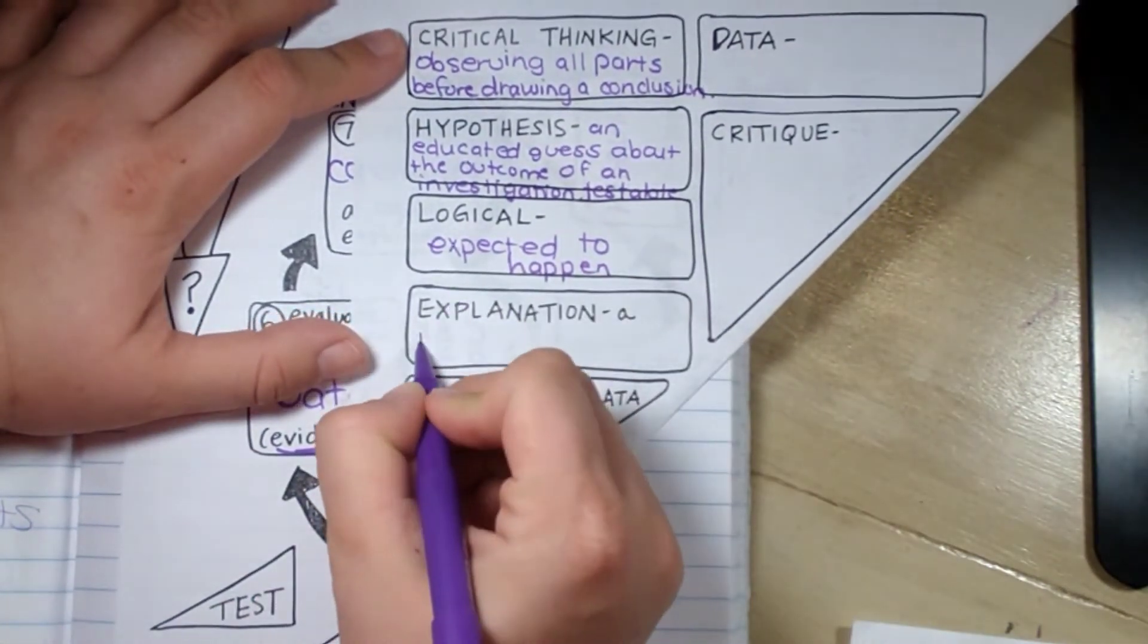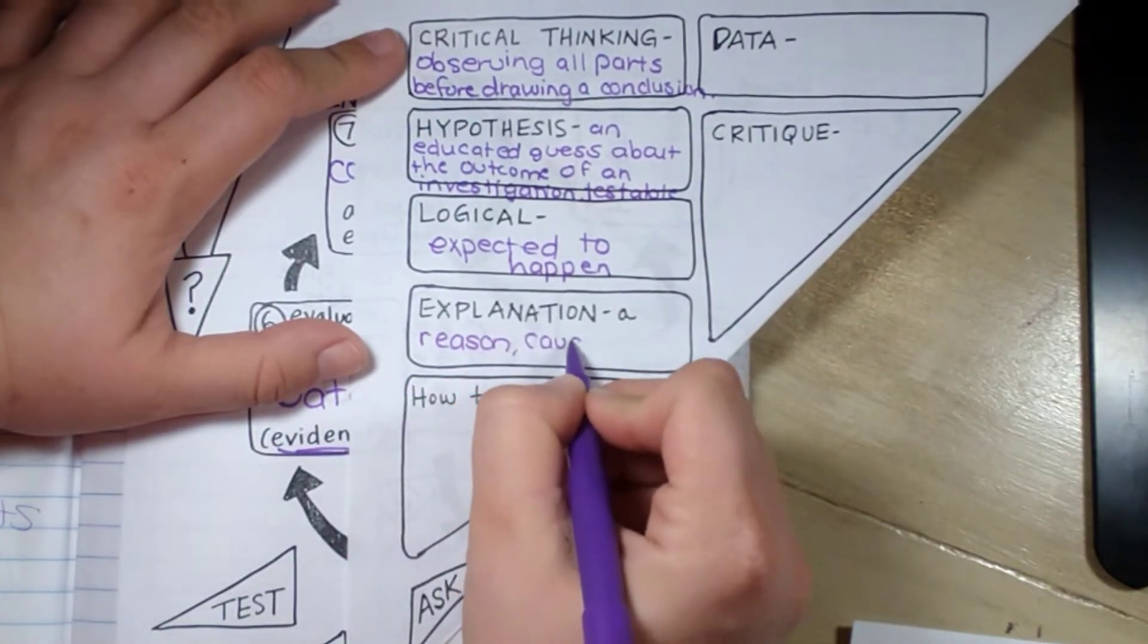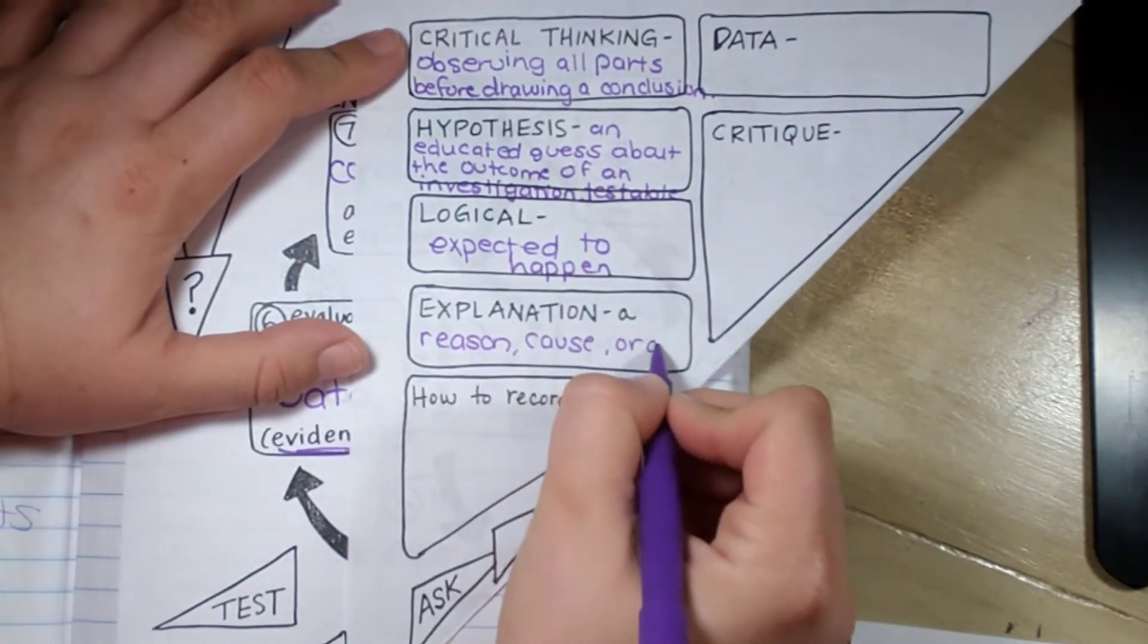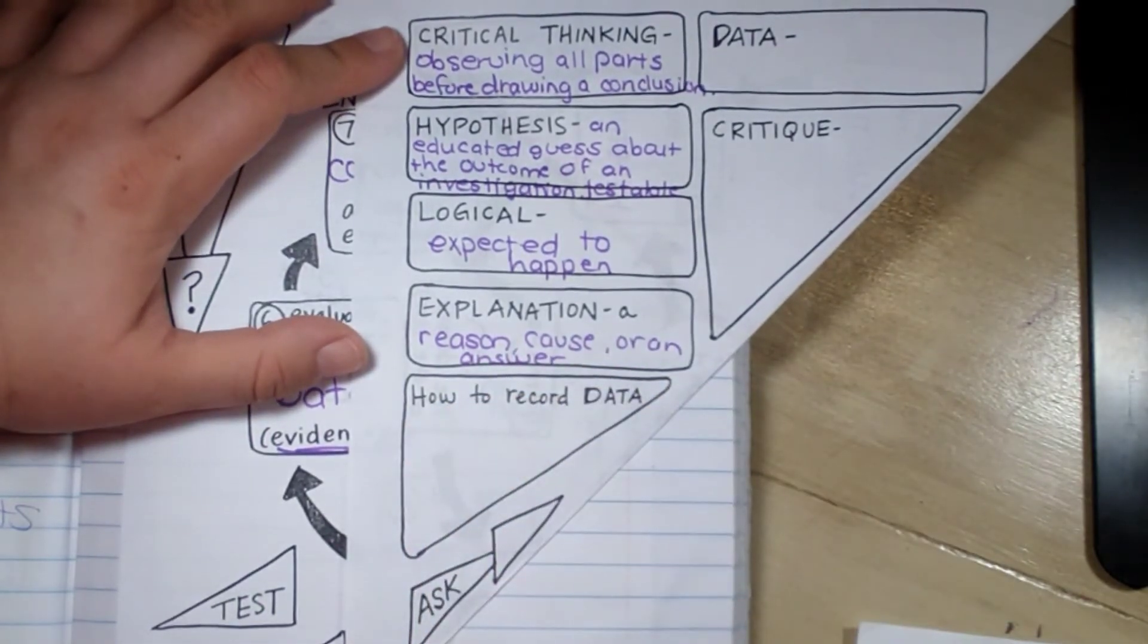An explanation is a reason, cause, or an answer. So we take our data, our information, and draw a conclusion to create an explanation.